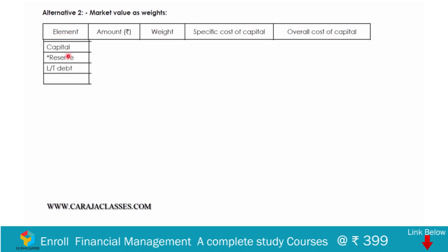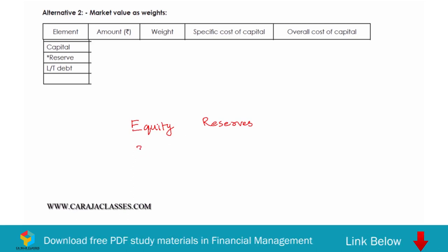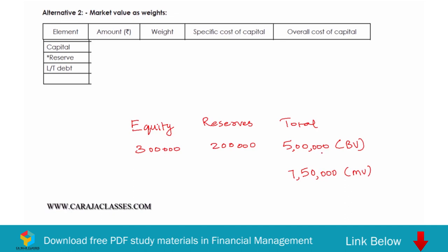Next we compute WACC based on market value weights. The elements are again capital, reserves, and long-term debt. For reserves, there is no separate market value given — only a combined market value of equity of 7 lakh 50 thousand. We need to split that figure between capital and reserves. The equity and reserves book values are 3 lakhs and 2 lakhs, totalling 5 lakhs.